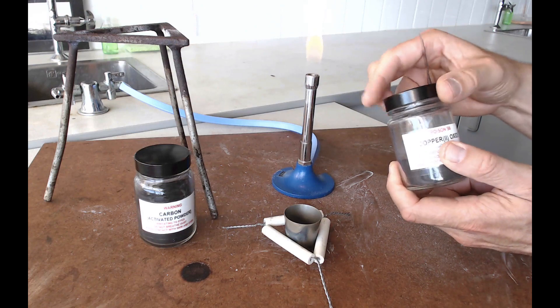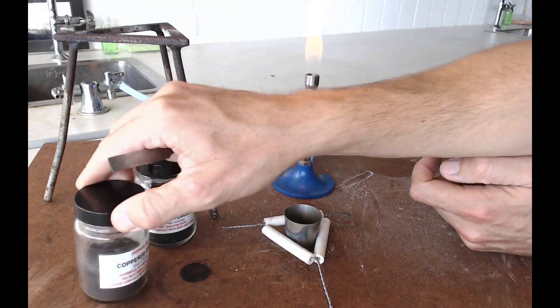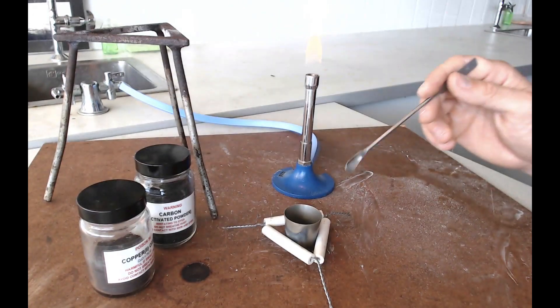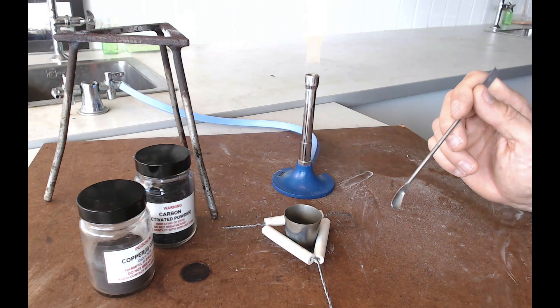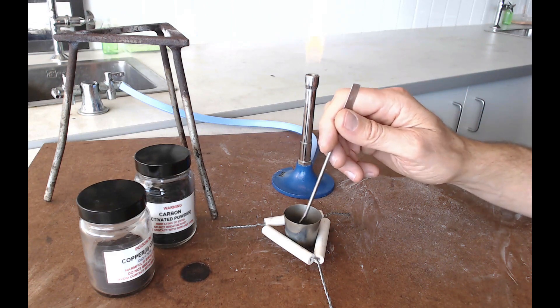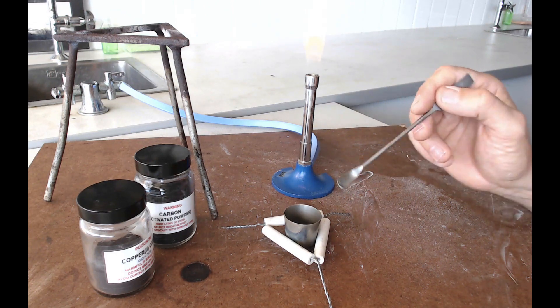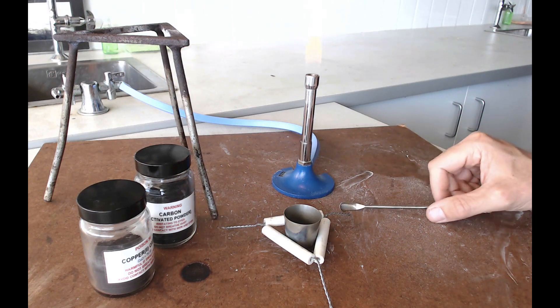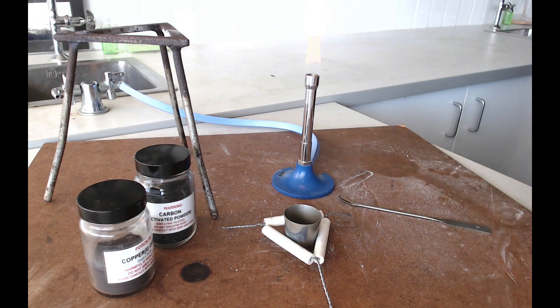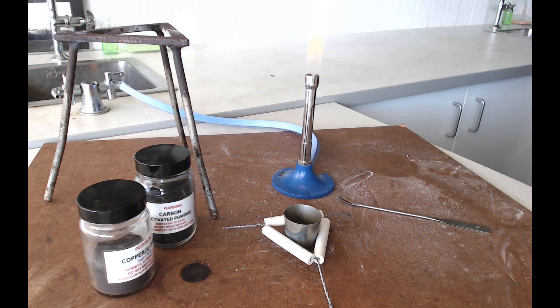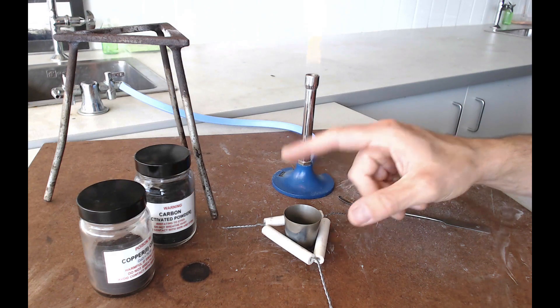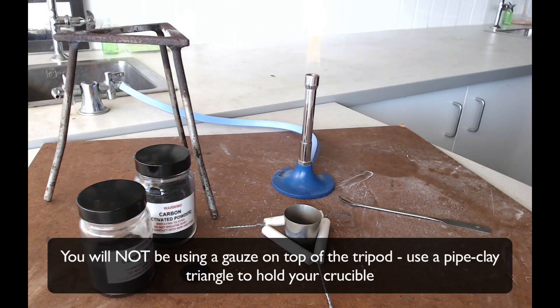Now you want three or four heaped spatulas of these two solids to go into your crucible. Once you've put them in there, give them a good stir before you heat anything up. Now the aim here is to try and heat the carbon so strongly that it's able to take the oxygen away from the copper oxide and to do that we're going to need to put our crucible on top of the tripod and heat it with a Bunsen.